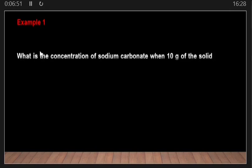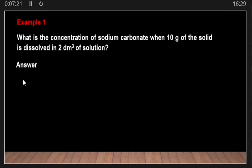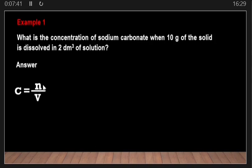Let's look at Example 1: What is the concentration of sodium carbonate when 10 grams of the solid is dissolved in 2 cubic decimeters of solution? We write our formula: concentration equals number of moles divided by volume. C is concentration, N is number of moles, and V is volume. We need both number of moles and volume to find the concentration.